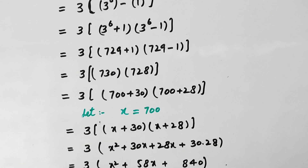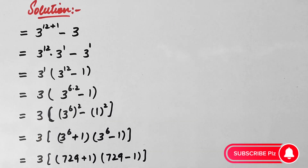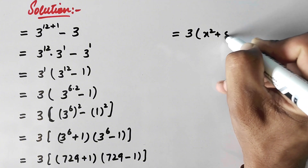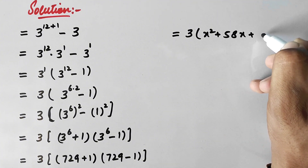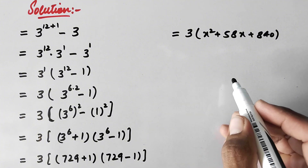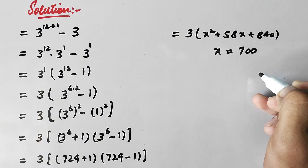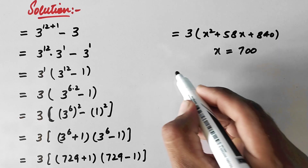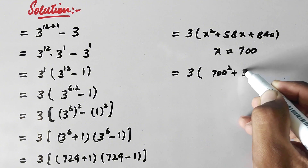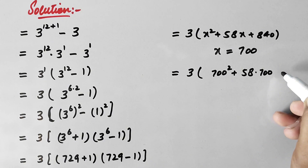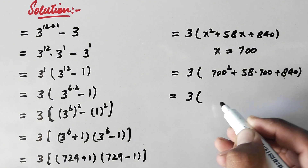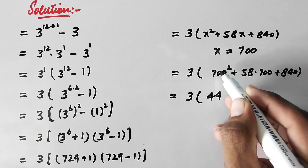Now recalling that we set x equal to 700, we substitute back. The expression becomes 3 into (700 squared plus 58 times 700 plus 840). We compute: 700 squared equals 490,000; 58 times 700 equals 40,600; plus 840.